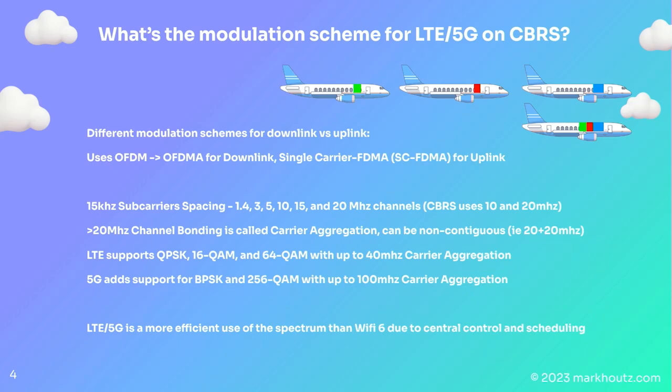The modulation scheme uses OFDMA. It actually works in cellular — it was built for that — unlike Wi-Fi where it's questionable. They use different forms of OFDMA for downlink versus uplink. For the uplink they use single-carrier OFDMA, a modified version that saves battery and is less processor-intensive for clients. LTE in general has 15 kilohertz subcarrier spacing. They have different channel widths, but typically you're seeing 10 to 20 megahertz channels.